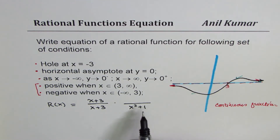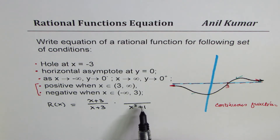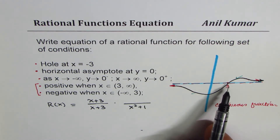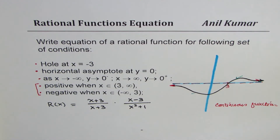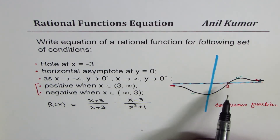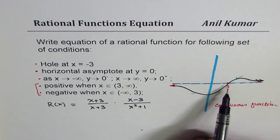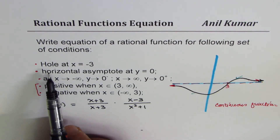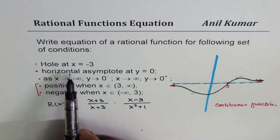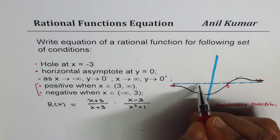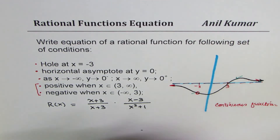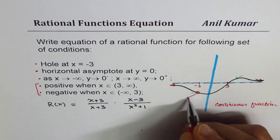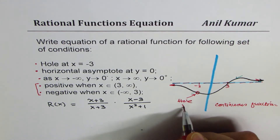Now, the degree of the numerator has to be less than or equal to that of the denominator. Since we are assuming an x-intercept at 3, we could try with x minus 3 in the numerator. As soon as I write x minus 3, I know we have a zero at 3 — it makes sense. One condition left is the hole at x equals minus 3. So let us say this point is minus 3 — in the graph we will have a hole here. This is not a filled point; that is a hole at x equals minus 3.